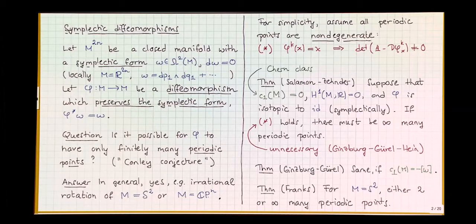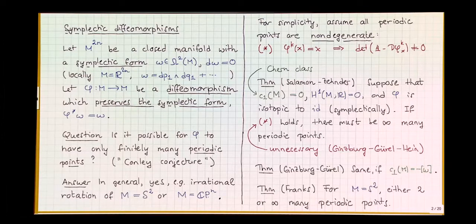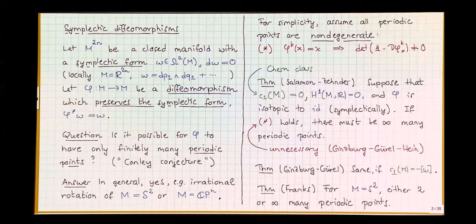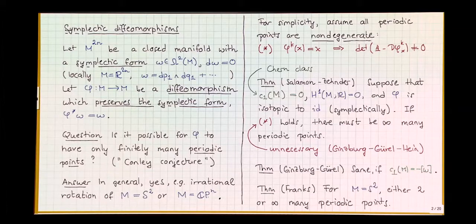But for the dynamical systems person — who are probably right — since you are studying an a priori totally unknown dynamical system, how can you start by imposing conditions on it? One of the key modern theorems is: there must always be infinitely many periodic points. There's a non-degeneracy condition, which was later eliminated with a lot of work by Ginzburg, Gurel, and Hine.